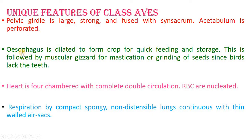The digestive system is complete with a mouth and anus. Digestion is extracellular. The esophagus is dilated to form the crop for quick feeding and storage, followed by the muscular gizzard for mastication and grinding seeds — since birds lack teeth, the gizzard performs the function of teeth. The heart is four-chambered with complete double circulation — two auricles and two ventricles. RBCs are nucleated. Respiration is by means of compact, spongy, non-distensible lungs connected with air sacs that increase respiratory efficiency.